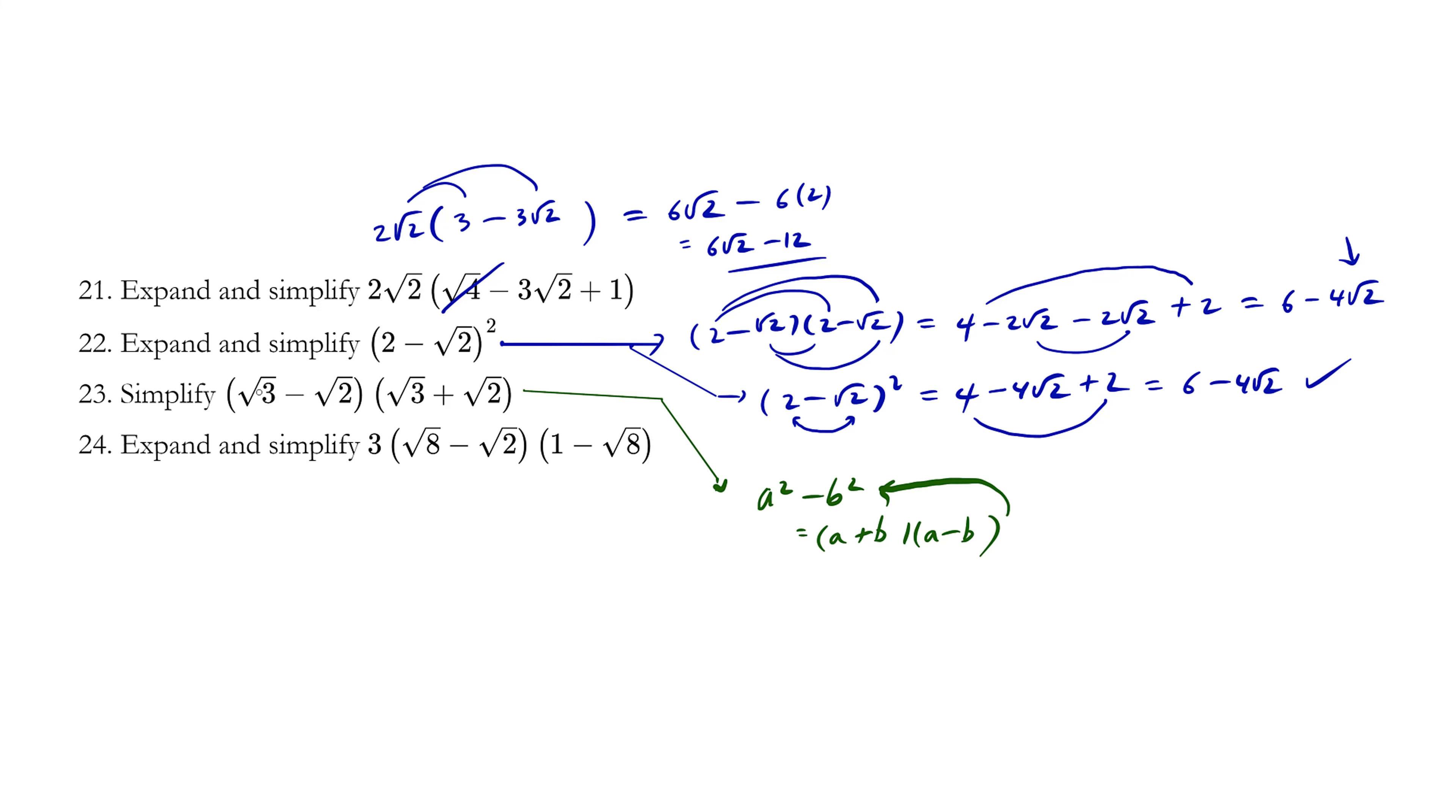So when you expand it out, root 3 times root 3 is simply 3. And then we have a minus b and a plus b. Root 2 times root 2, you write minus 2. Because our b value is root 2, b squared is going to be 2. So the final answer is 1.